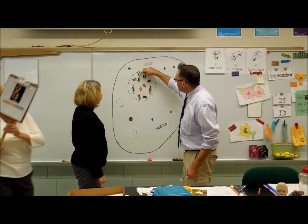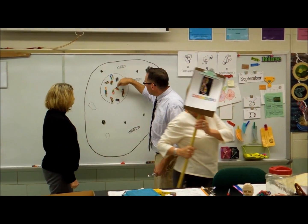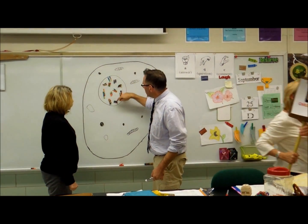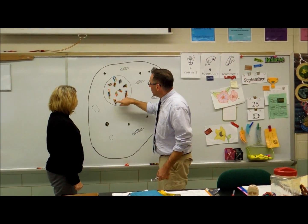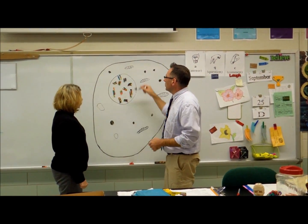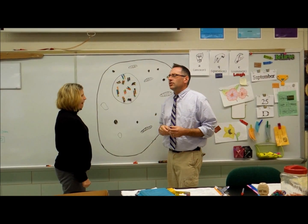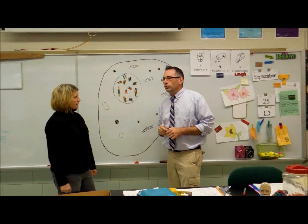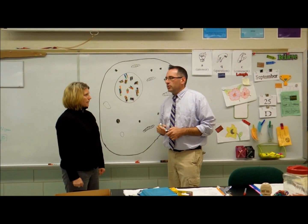These funny little rod-shaped things are chromosomes. Now, let's see. We've got 2, 4, 6, 8, 10, 12, 14, 16, 18, 20, 22. This cell has 22 chromosomes.